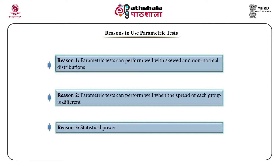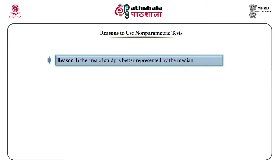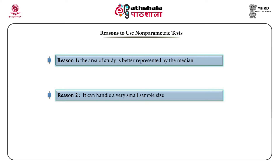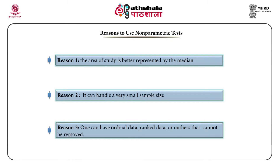There are also reasons to use non-parametric tests. First, the area of study is better represented by the median. Second, non-parametric tests can handle a very small sample size. Third, one can have ordinal data, ranked data, or outliers that cannot be removed. In general, when there are chances of impurity in the distribution of the population or sample and where extreme values are involved and cannot be easily replaced, we normally refer to non-parametric tests.